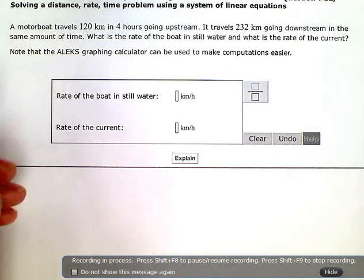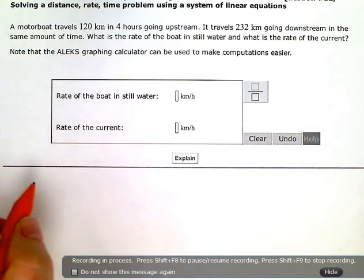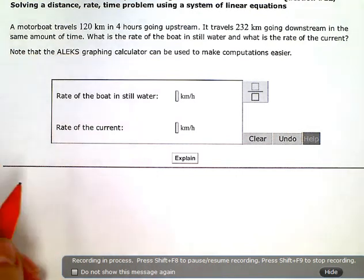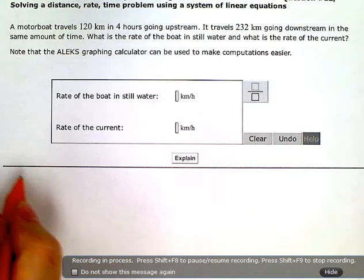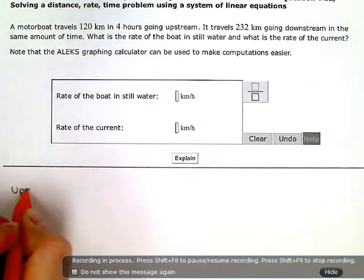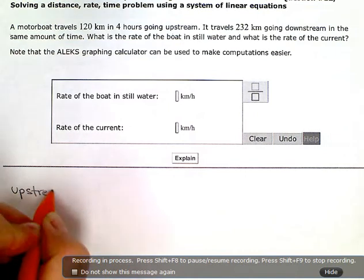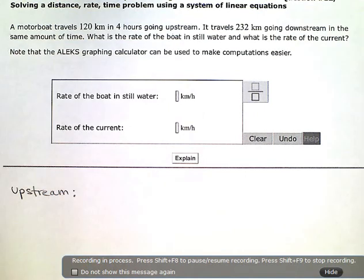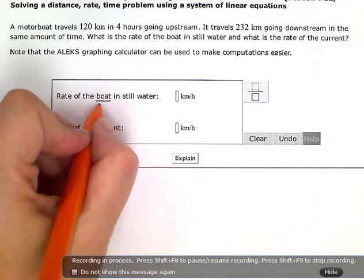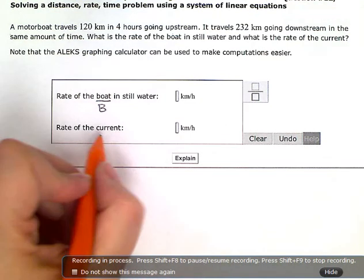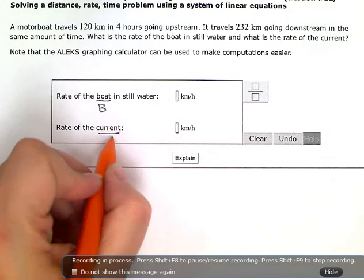So on this one here, I'm going to use a system of equations. First I'm going to do the trip upstream. And for my two variables, I'm going to use B for the boat and C for the current or the river.